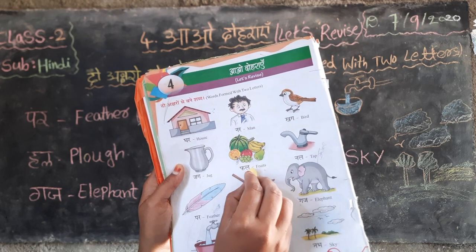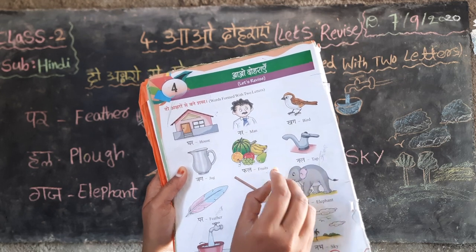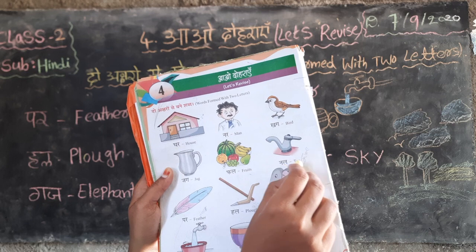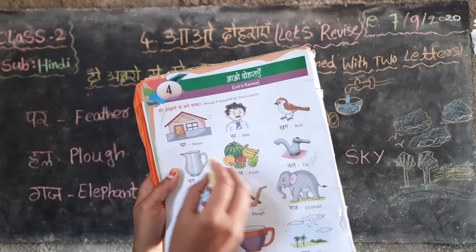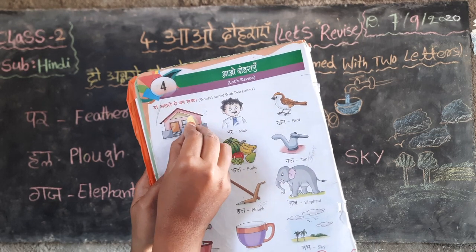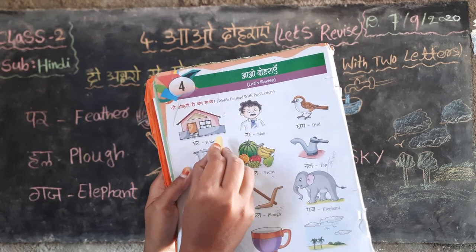Ful — fruits, F-R-U-I-T-S, fruits. Nal — tap. Ghar means illu, house.